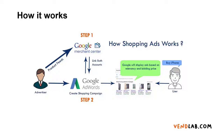So how do they work? As an advertiser, you need to generate a product feed and this is fed into the Google Merchant Center. If you're using a platform like Shopify, this will automatically generate your feed for you and you can just link it with Google Merchant Center. You also need to set up a Google AdWords account and you would set up the campaign in your Google AdWords account.